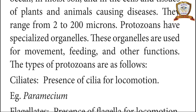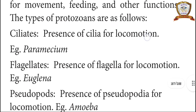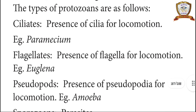The types of protozoa are as follows. Ciliates: presence of cilia for locomotion. Example: Paramecium. Flagellates: presence of flagella for locomotion. Example: Euglena. Pseudopods: presence of pseudopodia for locomotion. Example: Amoeba.